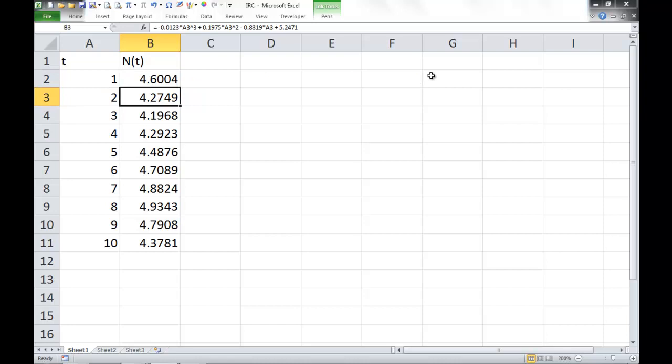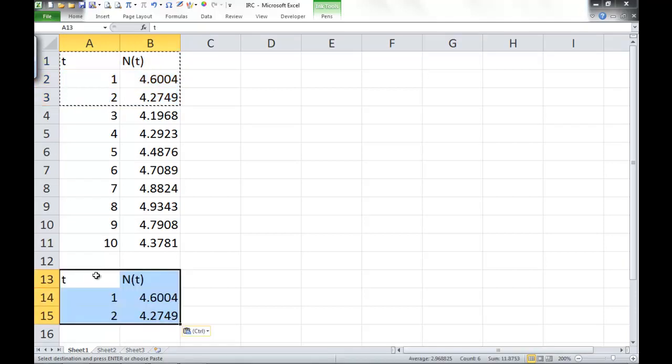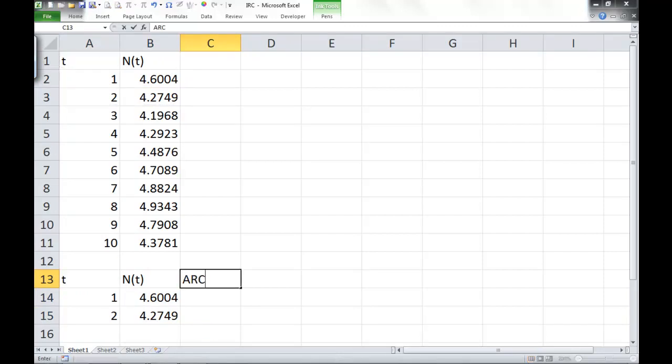So the first thing, let's look at an average rate of change. So let's copy the first two values of our table, and let's just go a little further down. Let's compute an average rate of change, an ARC, which I'll put in column C.